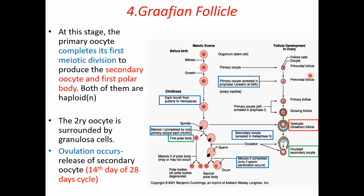The primary oocyte is arrested at prophase I during birth, and the ovary remains very inactive. It grows during puberty, and once ovulation begins, puberty is achieved. The ovulatory secondary oocyte is then released.